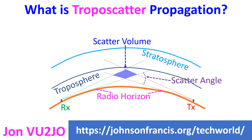The height of the troposphere is about 20 km near the equator, which comes to about 9 km in polar regions in summer. The height of the troposphere is more in summer than in winter. The troposphere can refract the higher end of the radio spectrum.